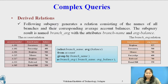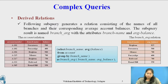The subquery result is named branch_average with attributes branch_name and average_balance. In the account relation, there are two tuples for a branch name of balance, hence the average of balance is 825 in the resulting table, and the remaining tuples are the same as that of the original relation.